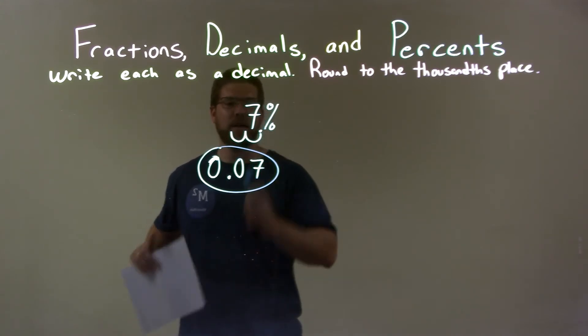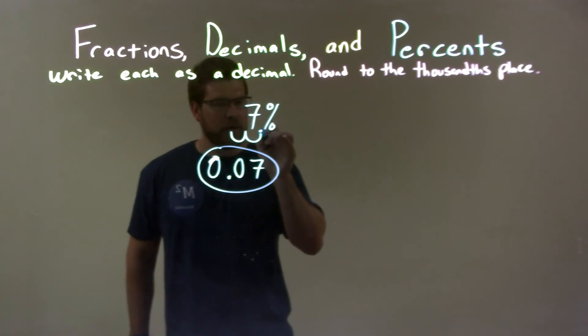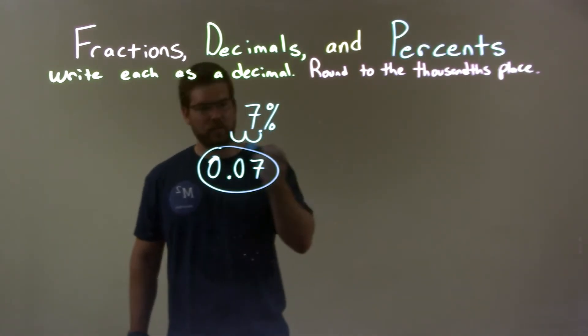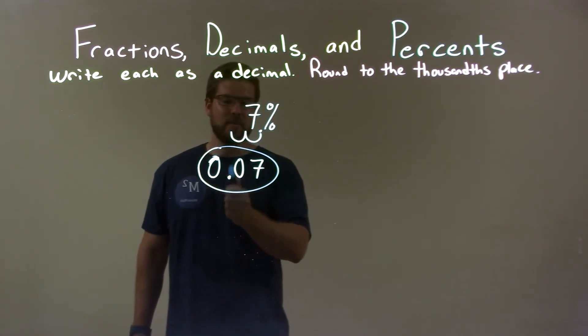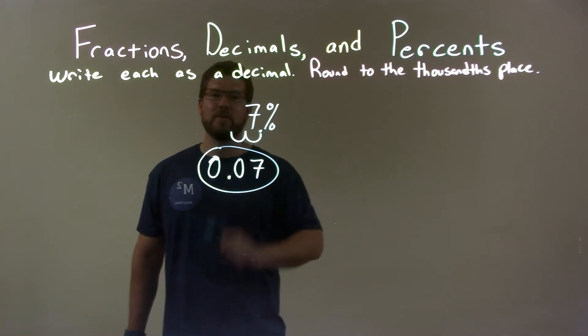So quick recap. We're given seven percent. To convert that as a decimal, we take the point that's right here and move it two spots to the left, and we get zero point zero seven. And there we have our decimal final answer.